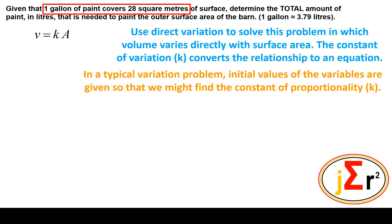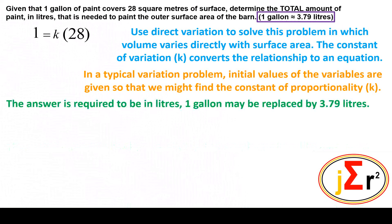The volume is one gallon and the area is 28 square meters, which we substitute in their appropriate places. However, one gallon is approximately equal to 3.79 liters.